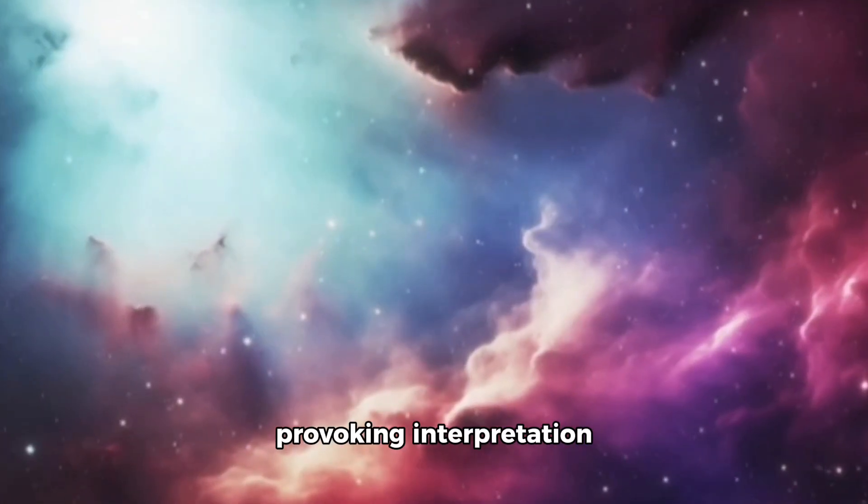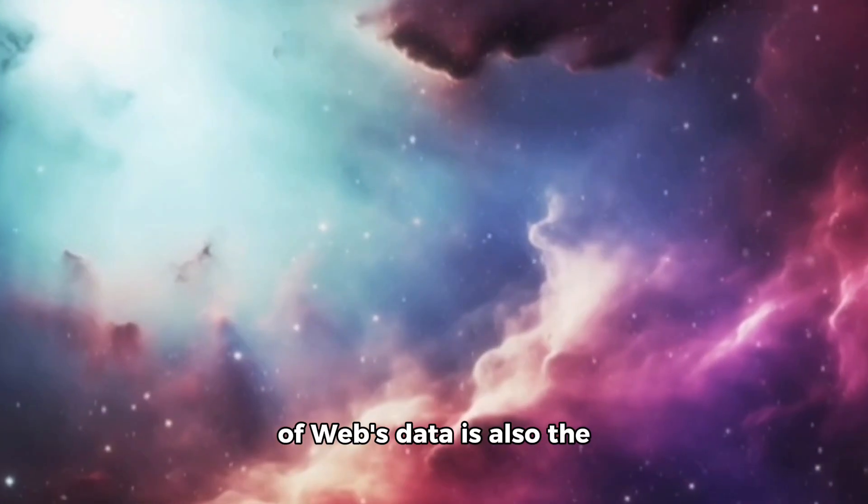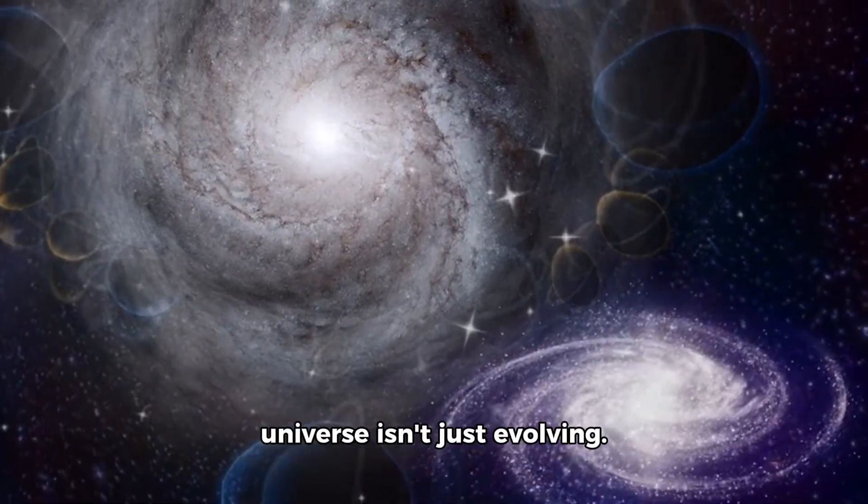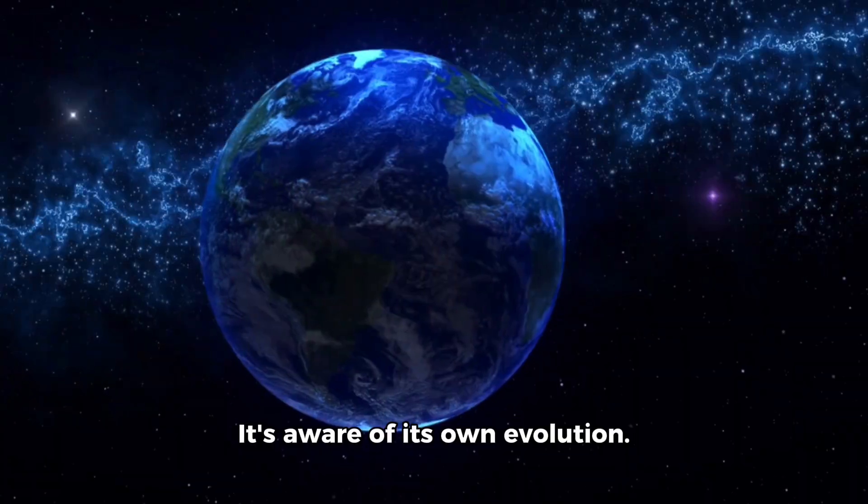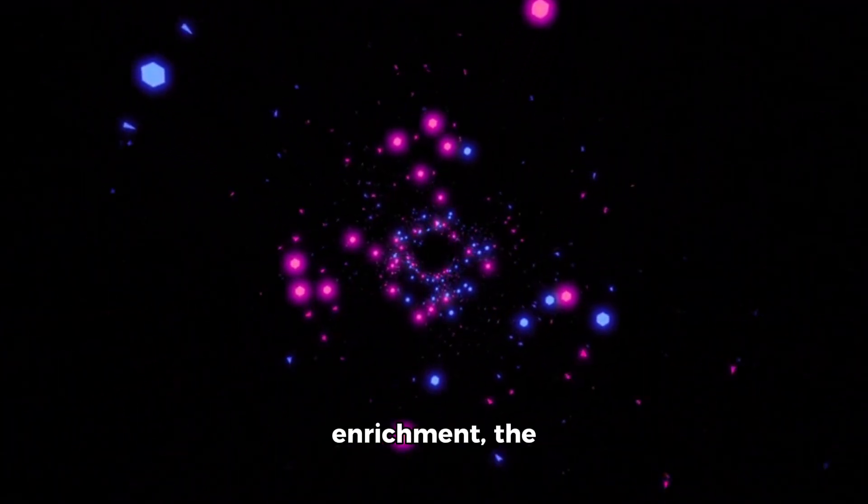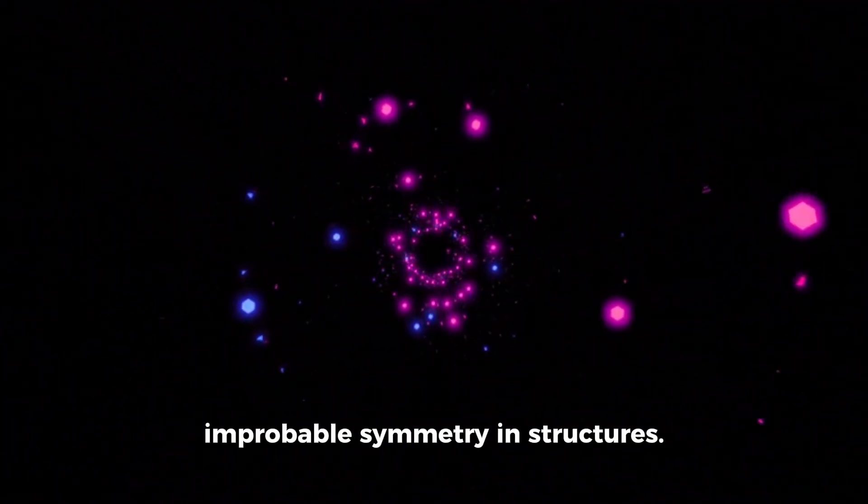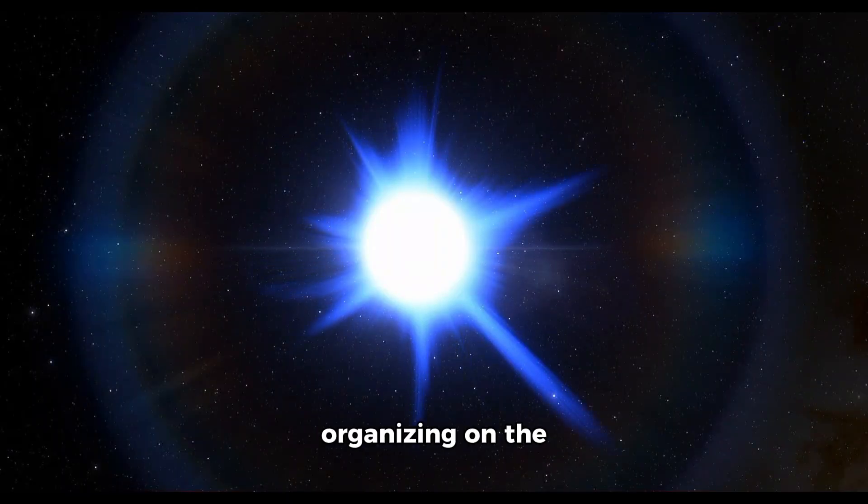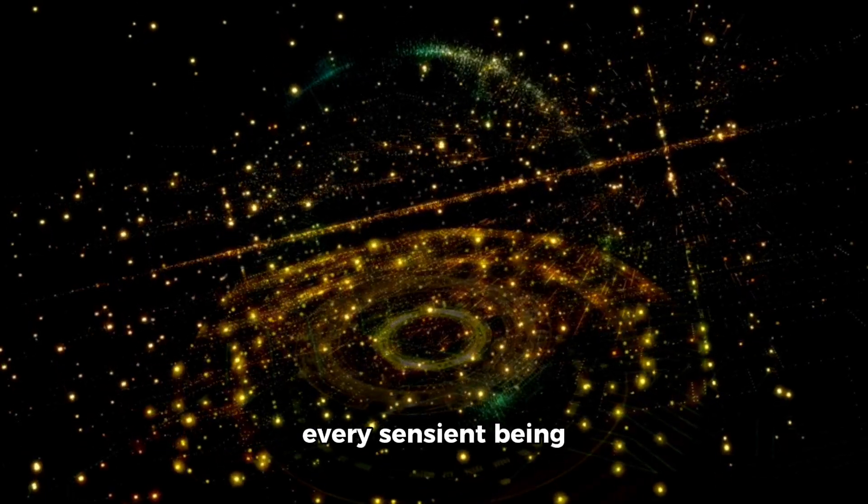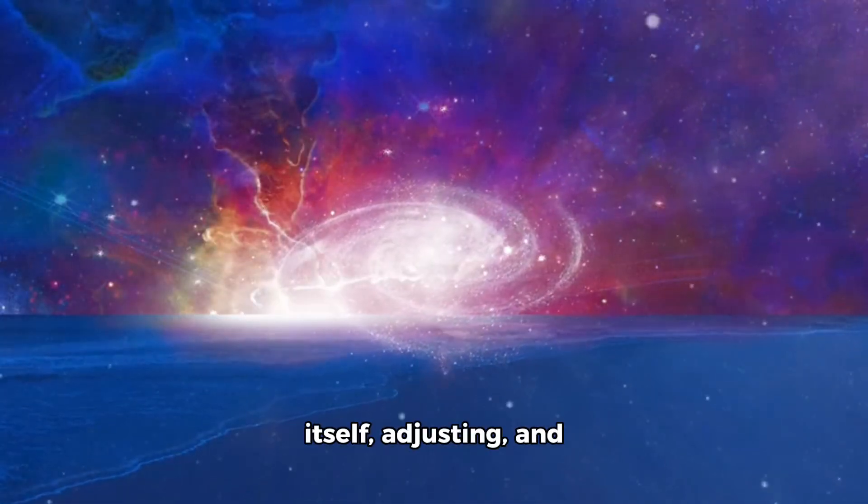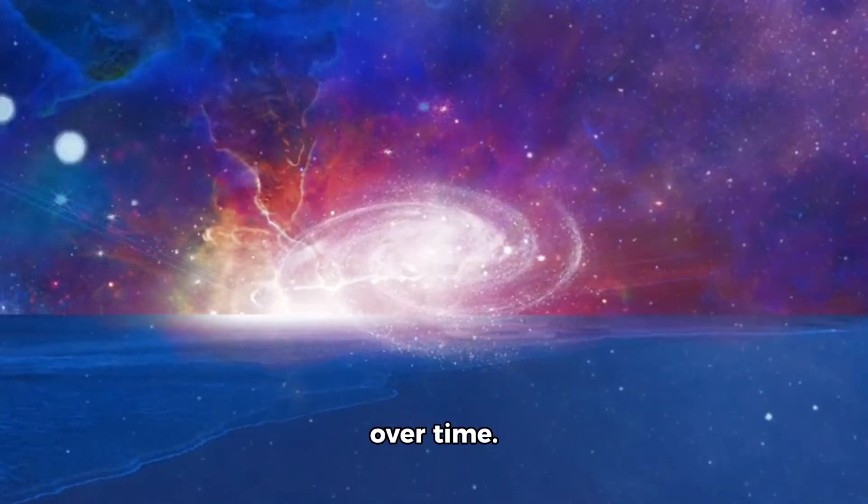Perhaps the most thought-provoking interpretation of Webb's data is also the most unsettling. Some researchers are beginning to entertain the possibility that the universe isn't just evolving. It's aware of its own evolution. The intricate order in galactic rotations, the rapid chemical enrichment, the improbable symmetry in structures. These could be signs not of randomness but of a system that is self-organizing on the largest possible scale. In this view, every star, every galaxy, every sentient being could be part of a cosmic feedback loop. The universe observing itself, adjusting, and growing in complexity over time.